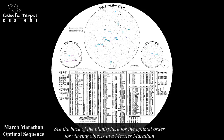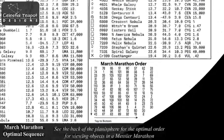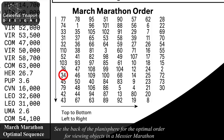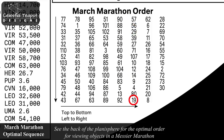Many amateur astronomers take advantage of the new moon in March to view all 110 Messier objects in a single night — a Messier marathon. It's easy to miss a few if you get them in the wrong order, so we've provided an easy guide to the optimal order for the March marathon on the back of the planisphere.